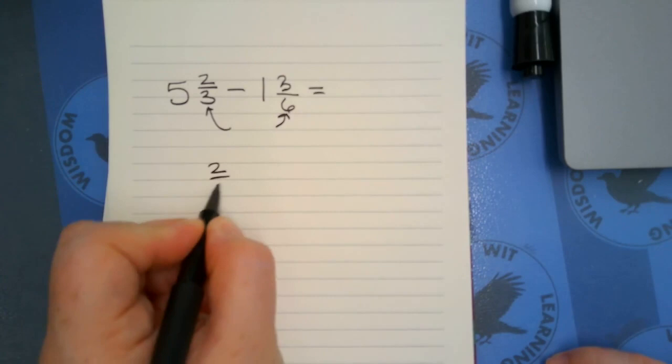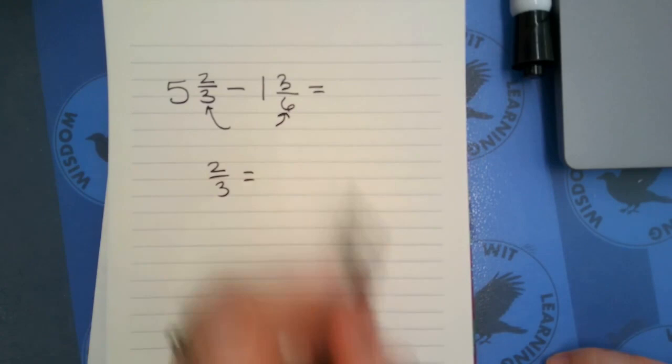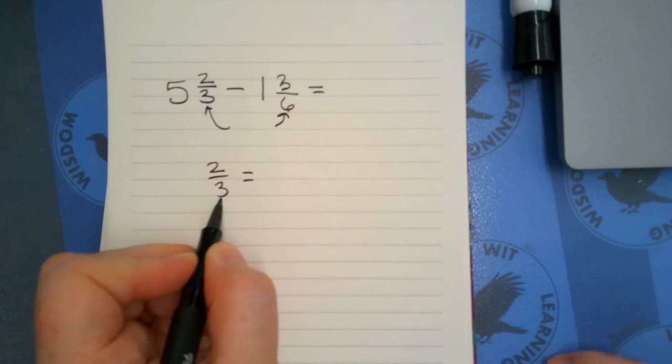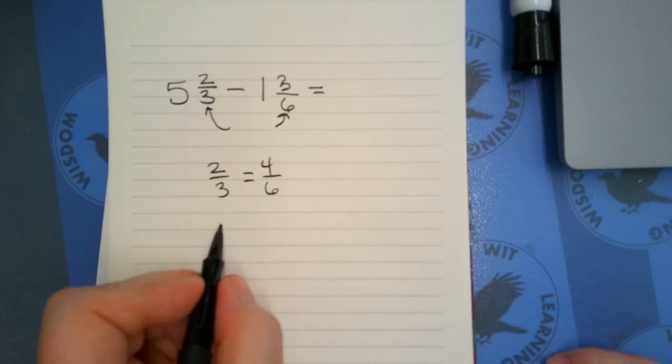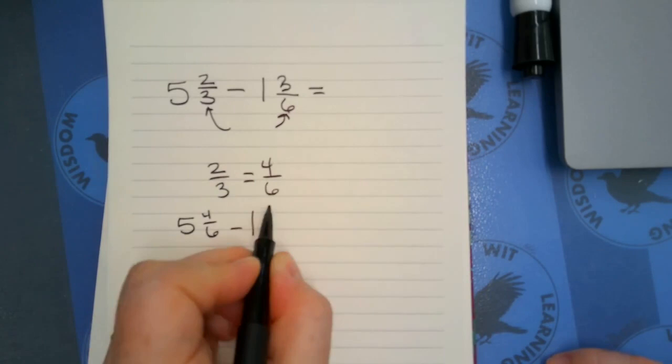So I know that two thirds could be written as an equivalent fraction worth something in sixths because I recognize my math facts. So I know that three times two is going to be six and two times two is going to be four. So I could rewrite my two thirds as four sixths. Five and four sixths minus one and three sixths.